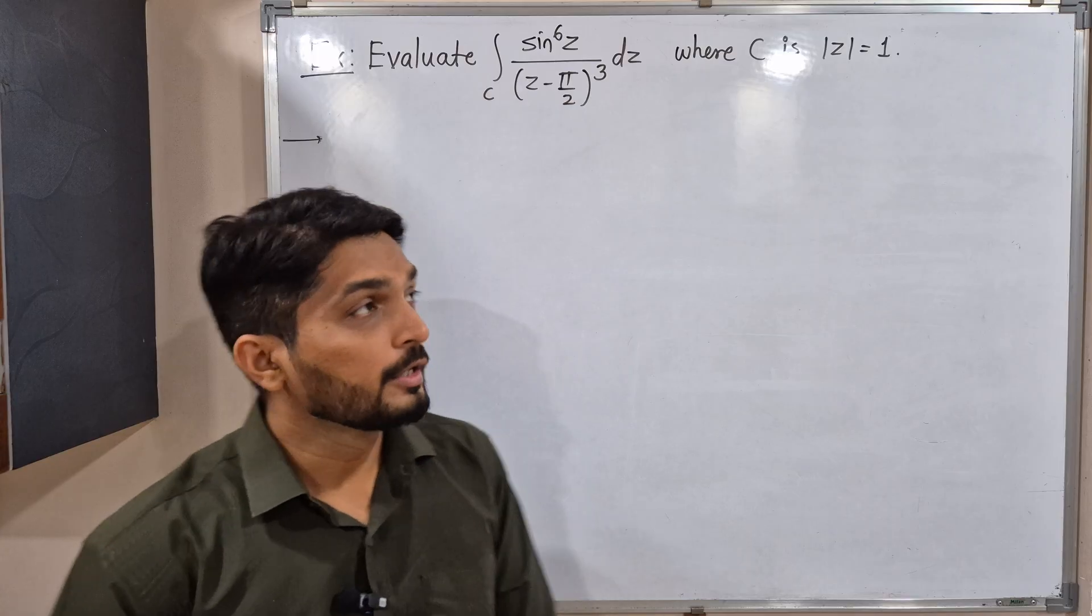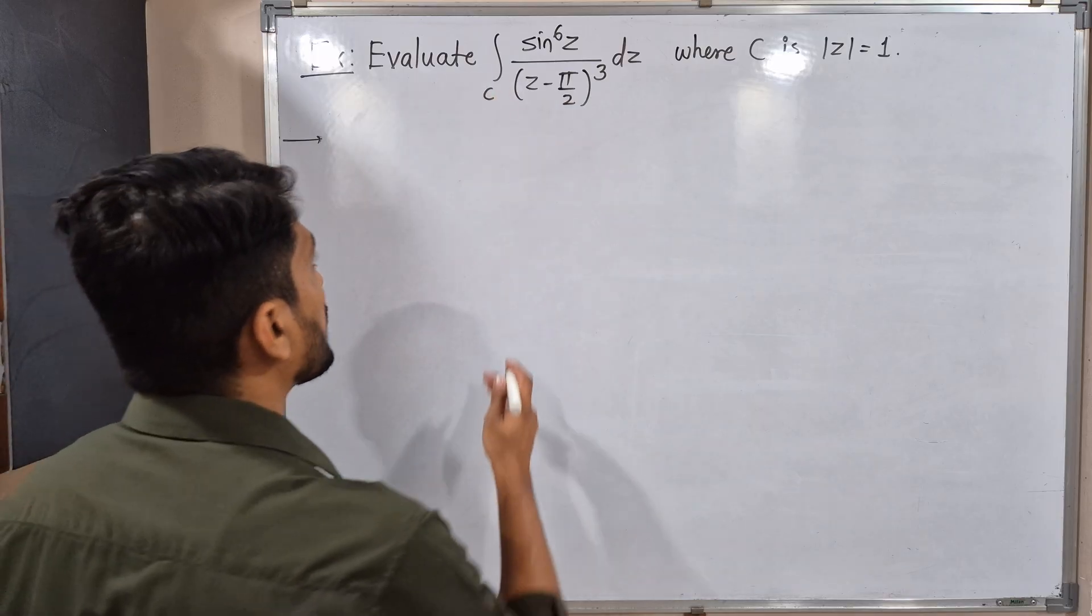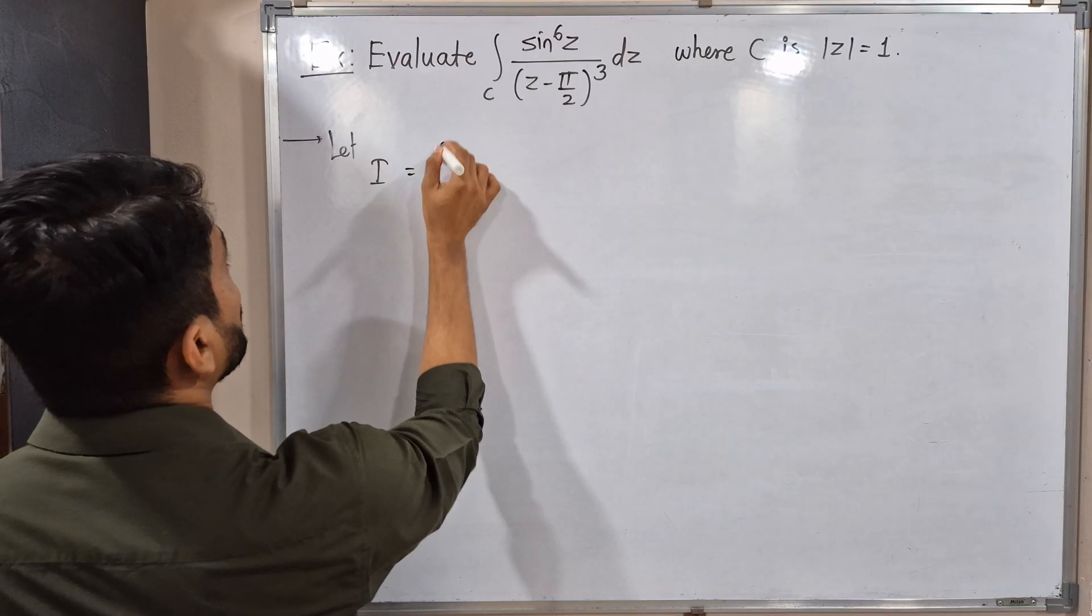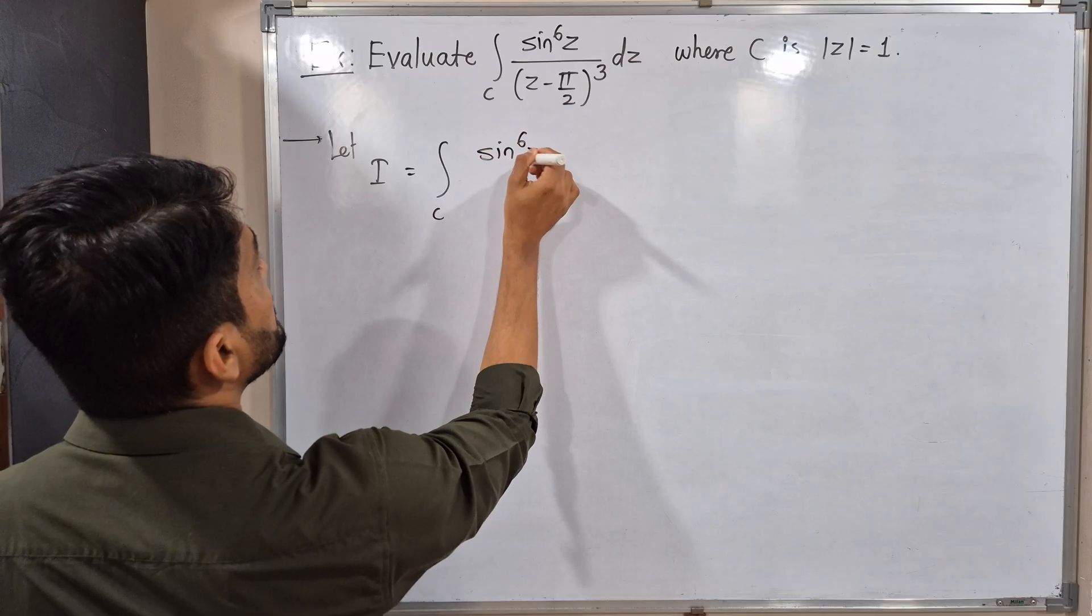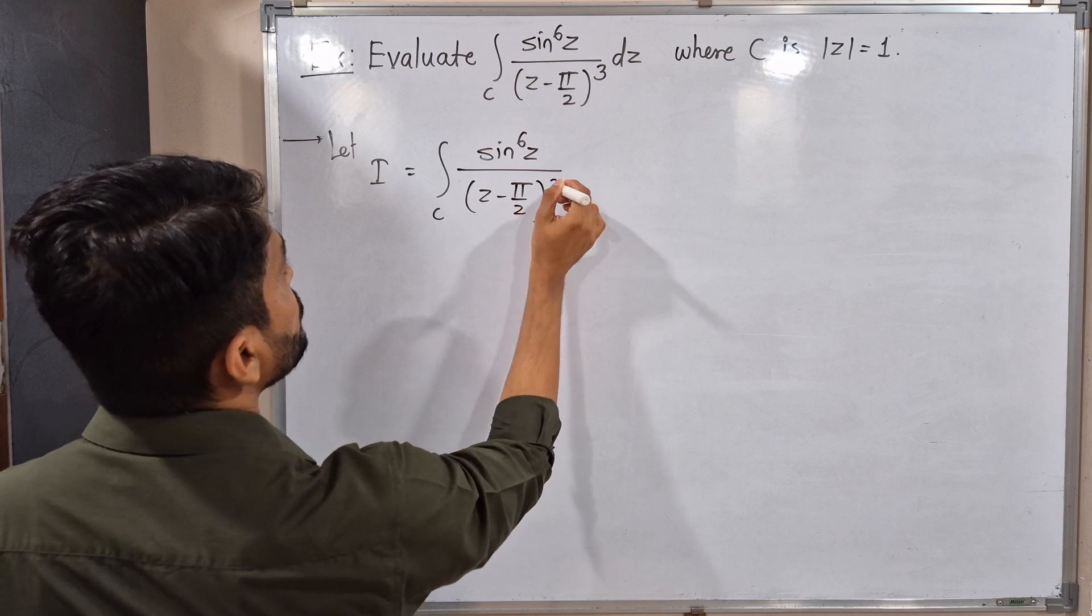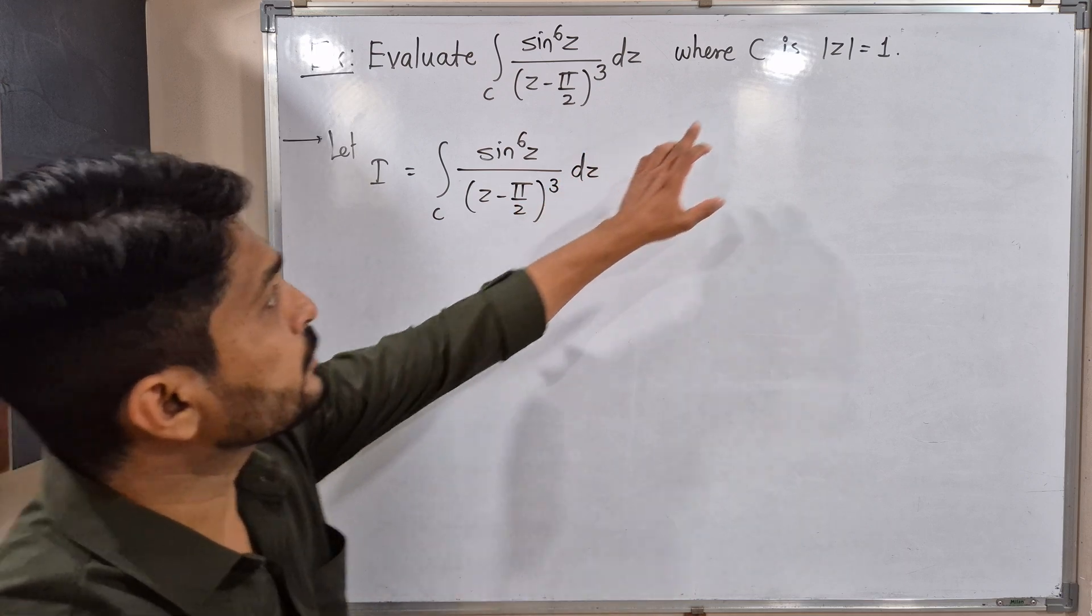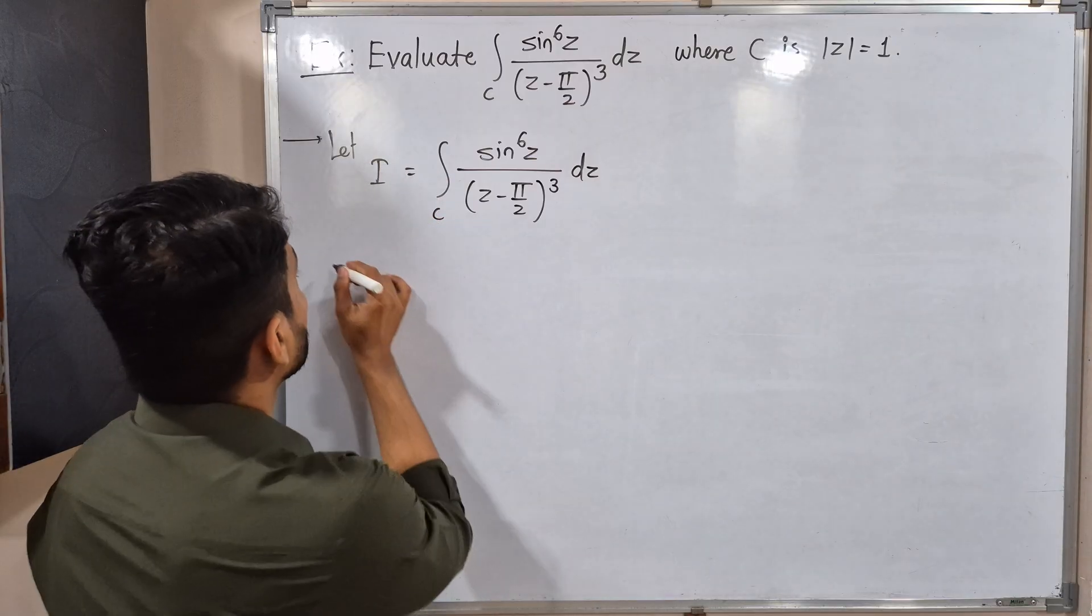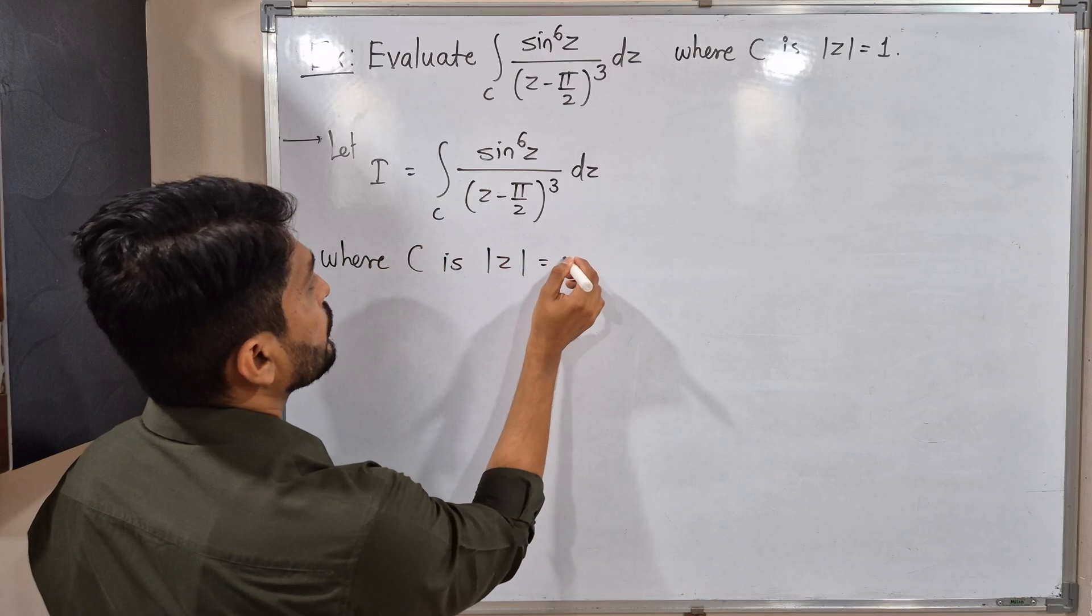Let us solve this problem. Let the integration be I. I is equal to integration over C, sin raised to 6z upon z minus π by 2 raised to 3 dz. This is our integration, and C is so important for us. What is C? C is mod z is equal to 1.